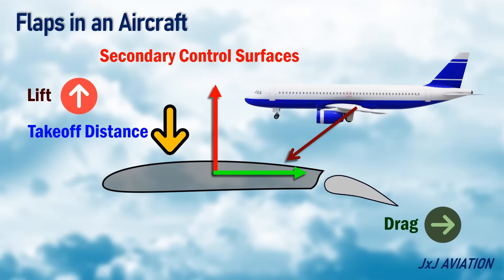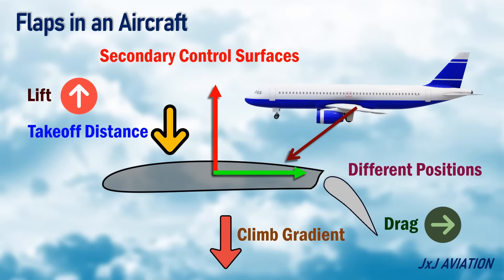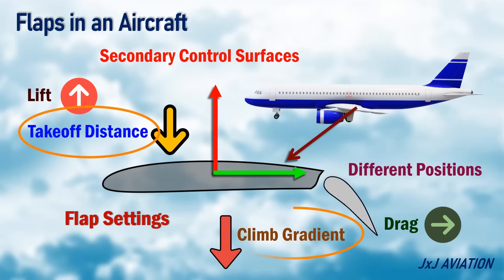The increase in drag reduces the climb gradient. The flaps can be extended to different positions or angles, which is called flap settings. The flap settings have an impact on the takeoff distance and climb gradient.